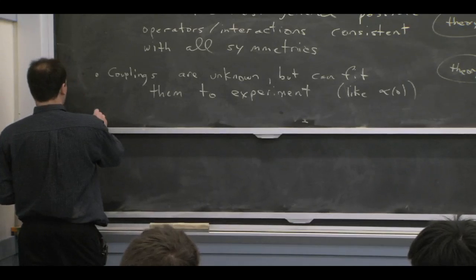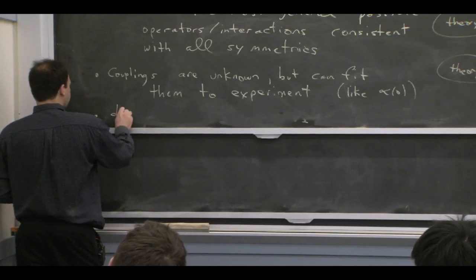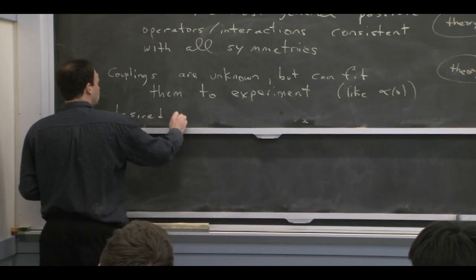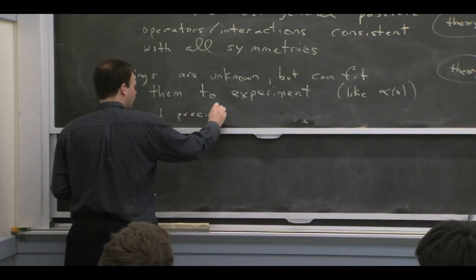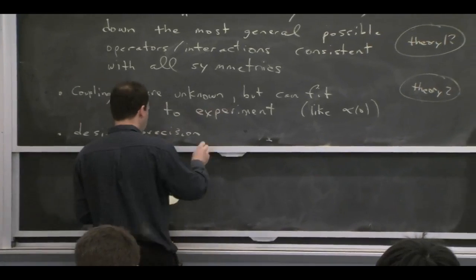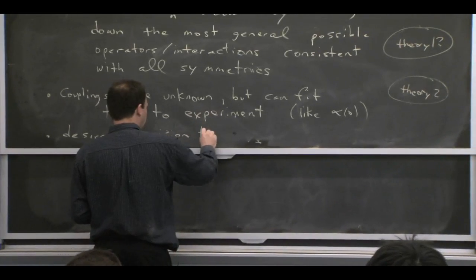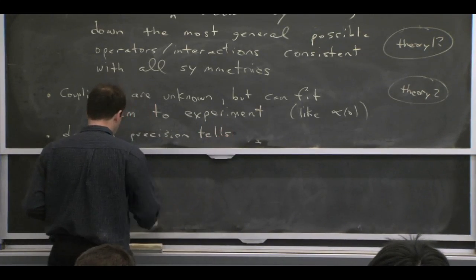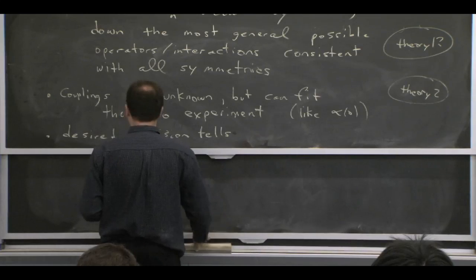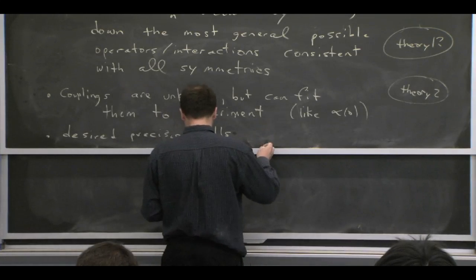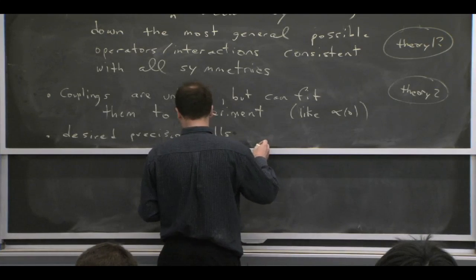Again, the desired precision tells us when to stop. It's important that we have a power counting for this theory that is defined irrespective of what the full theory was, so that we can stop even in the bottom-up case.